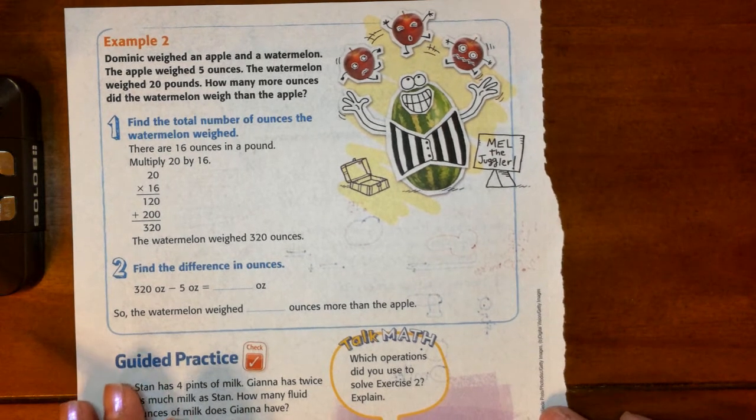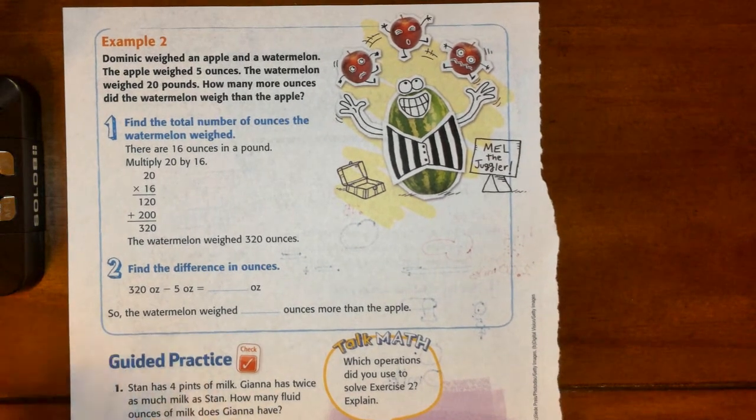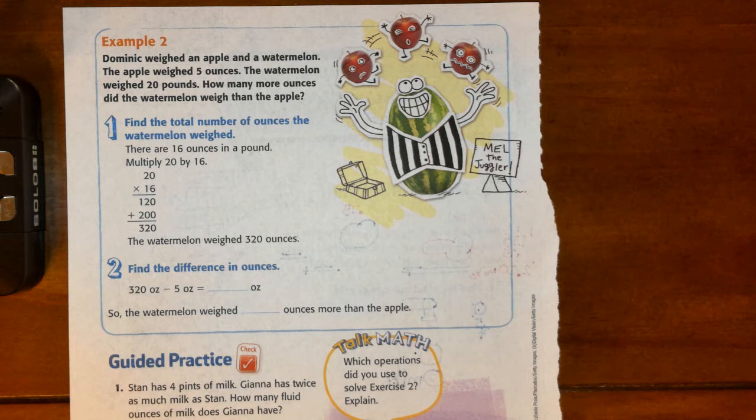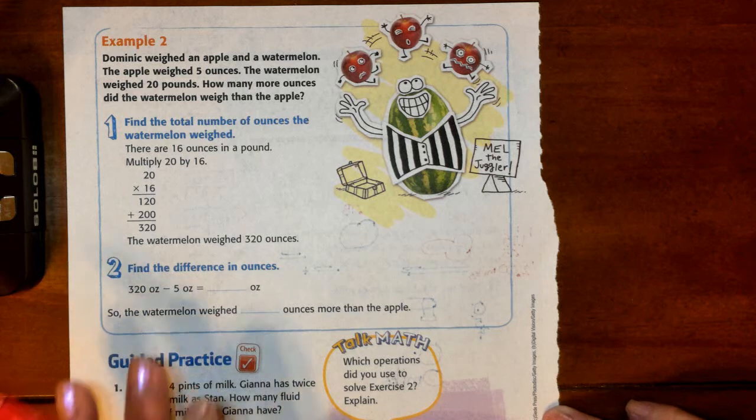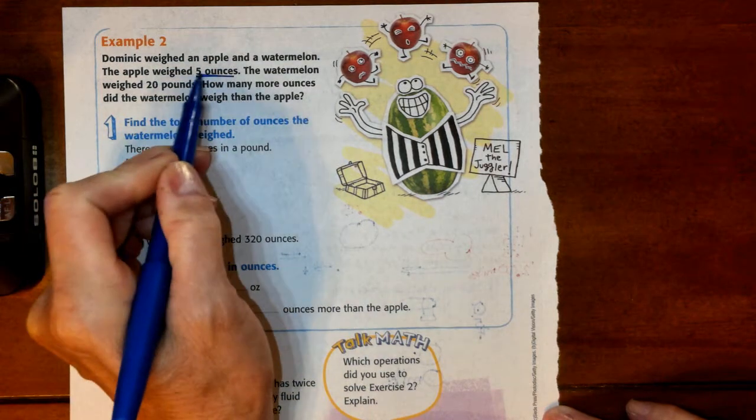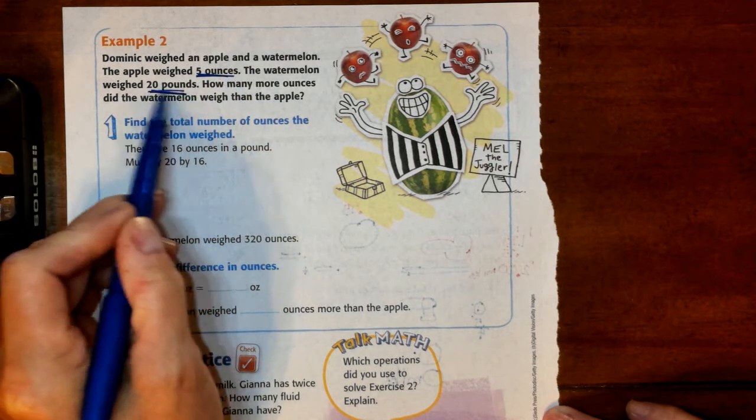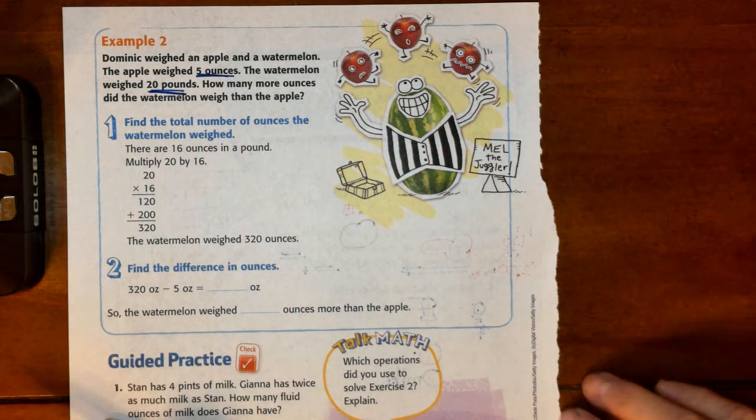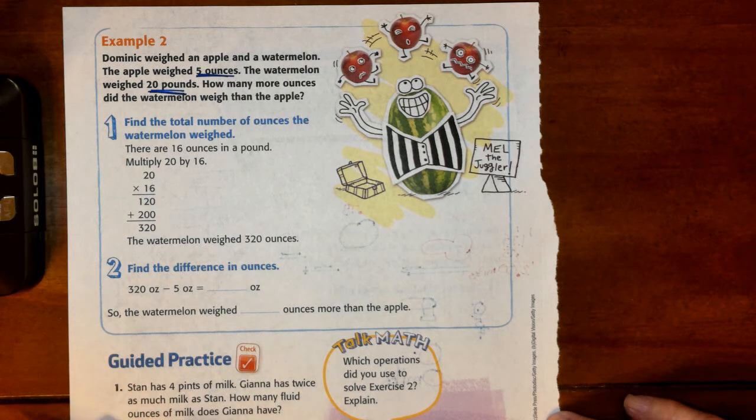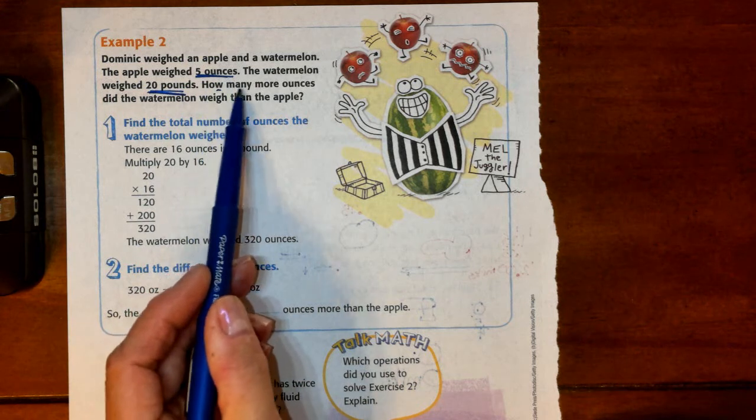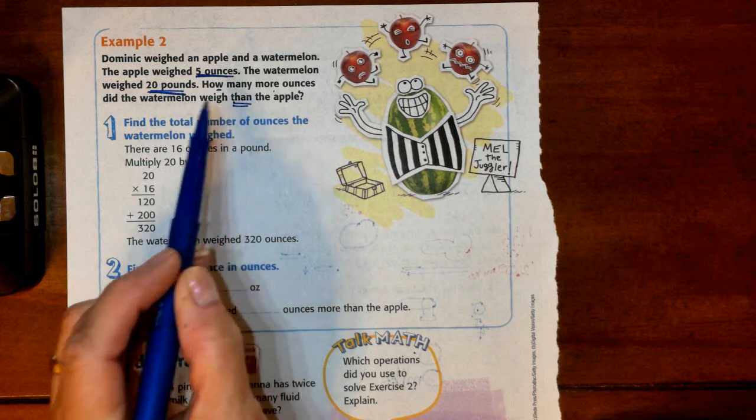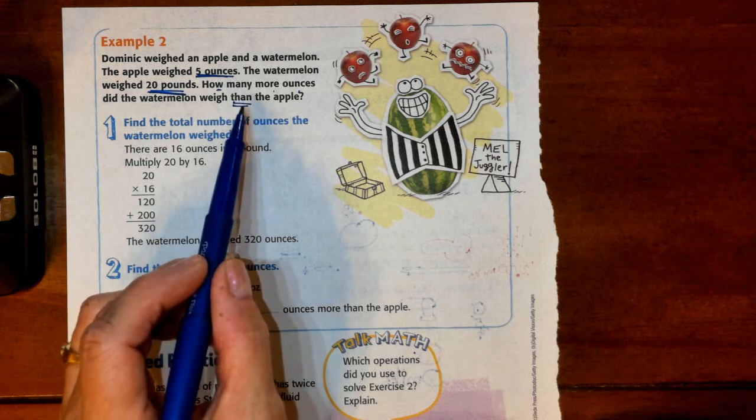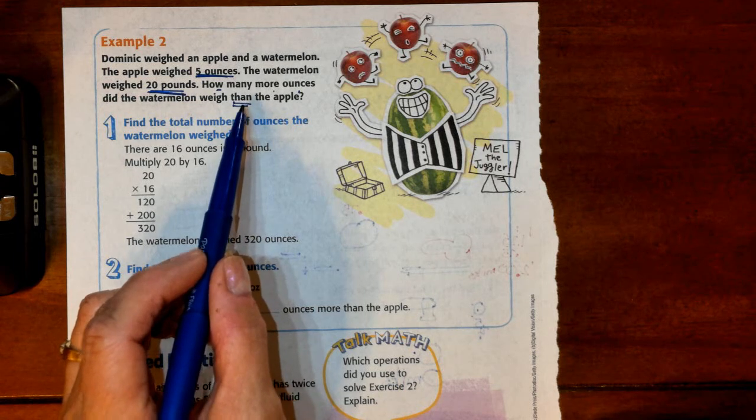In example 2, it says that Dominic weighed an apple and a watermelon. Sounds like Dominic is home and very bored. The apple weighed 5 ounces and the watermelon weighed 20 pounds. So there's our red flag right there. We've got something in ounces and we've got something in pounds, and you know that they're going to ask us that we're going to need to convert so that we're working with the same units of measure. The question is, how many more ounces did the watermelon weigh than the apple? This word is very important—than, T-H-A-N—means that we're going to be comparing two things.